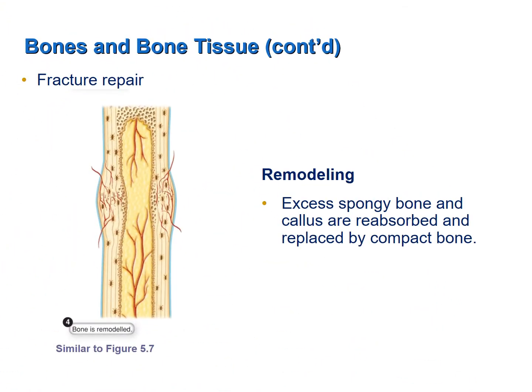After a number of months have passed, the granulation tissue is completely replaced with bone tissue. The individual regains use of the affected body part, normal stresses from physical activity are returned to the bone, and the bone remodels accordingly. Excess spongy bone and the bony callus are reabsorbed and replaced by compact bone. Sometimes this process is so complete that it is not possible to tell a fracture ever occurred; other times remnants of the bony callus remain visible on x-ray.